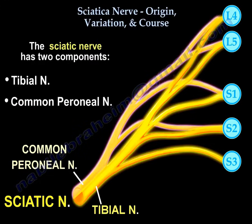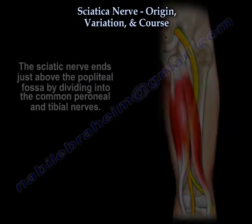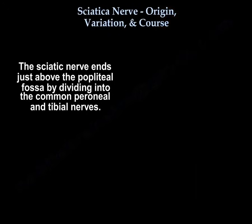The sciatic nerve has two components: the tibial nerve and the common peroneal nerve. The tibial nerve arises from the ventral divisions of all roots of the lumbosacral plexus from L4 to S3, and the common peroneal nerve arises from the dorsal division of L4 to S2 — it does not arise from S3. The nerve ends just above the popliteal fossa by dividing into the common peroneal nerve and the tibial nerve.